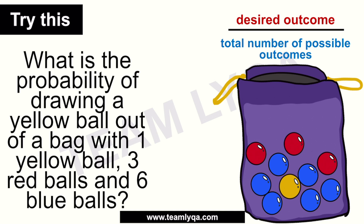How do we get the answer? First of all, we look at our desired outcome — what do we want to happen? We want to draw a yellow ball. So the next question is, how many yellow balls are there? That is our desired outcome. We can see there is only one. So that becomes our numerator: one. Over the total number of possible outcomes.